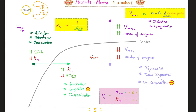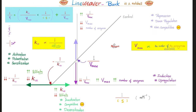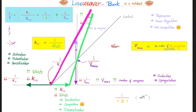On the Michaelis-Menten graph, a competitive inhibitor shifts the curve to the right, but VMAX does not change. A non-competitive inhibitor decreases VMAX. On the Lineweaver-Burk plot, competitive inhibitors shift to the right but intersect at the same Y-axis point since VMAX is unchanged. Non-competitive inhibitors increase 1/VMAX (moving up the Y axis) while KM stays the same. Note that with competitive inhibitors, the old and new lines intersect on the Y axis; with non-competitive inhibitors, they intersect on the X axis.